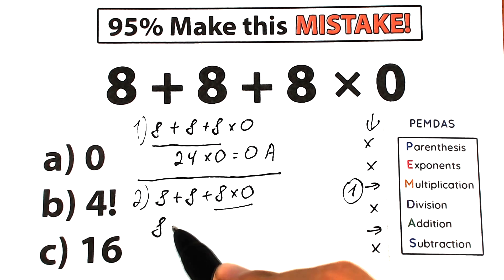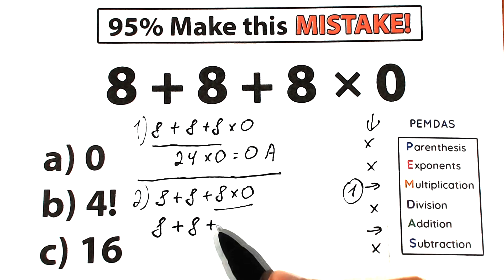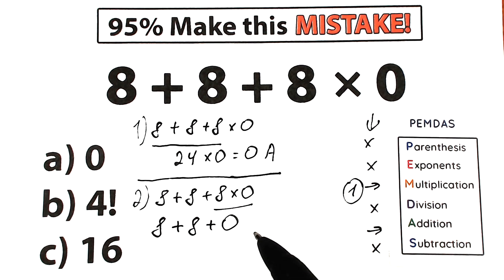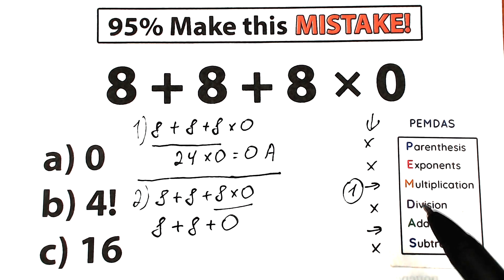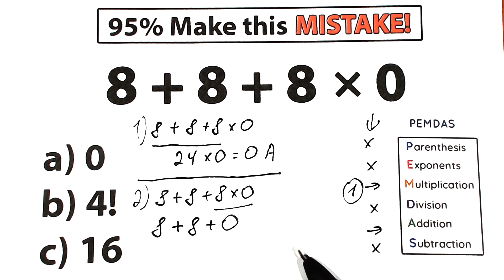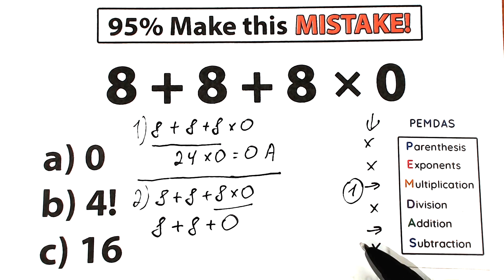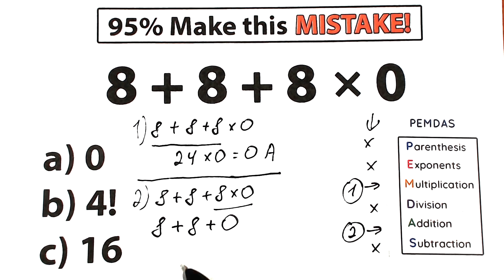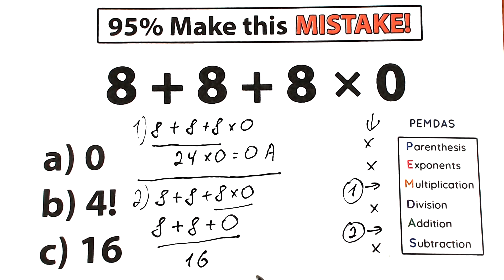After multiplying 8 times 0, we get 8 plus 8 plus 0. We've completed our first step — multiplication. Our second step is to add: 8 plus 8 plus 0, which equals 16. This is option C.